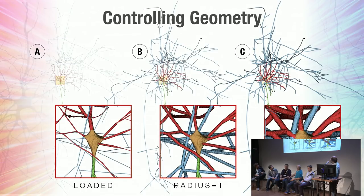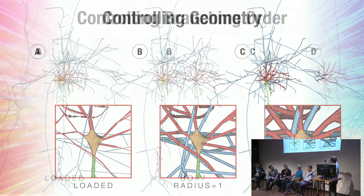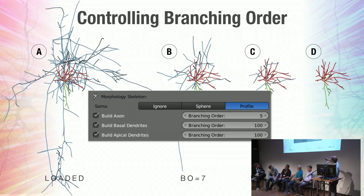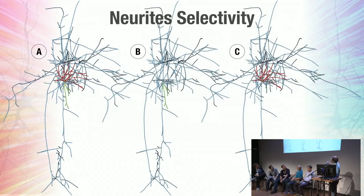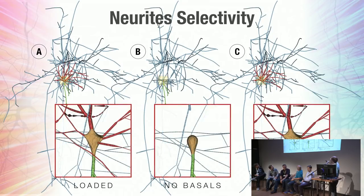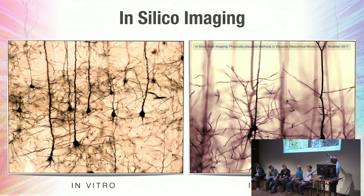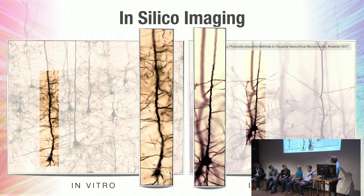We can also control the geometry, trying to change the radii to see something on the global scope or something very specific to a certain block. We can control the branching order with very simple clicks, and select certain branches to visualize, which changes the shape of the somata. We can also use different methods to sketch the morphologies — for example the zigzag mode — and generate meshes that we can use to generate volumes, which gives us something we can see exactly under the microscope.